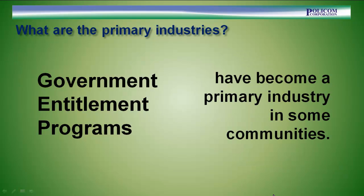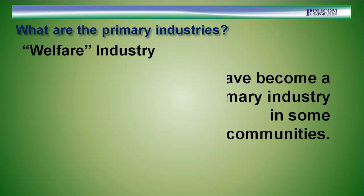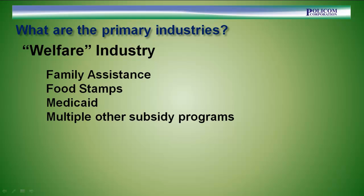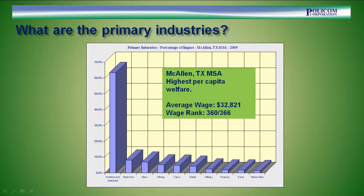Government entitlement programs have become a primary industry in some communities. One example is the welfare industry. Family assistance, food stamps, Medicaid, and the multiple other subsidy programs have combined in some communities to become primary industries. This is the McAllen, Texas metropolitan area. It has the highest per capita welfare of any metropolitan area in the country. As you can see, welfare and Medicaid combine to be the biggest primary industry in the area, accounting for 63% of all the imported money to the economy.